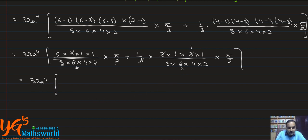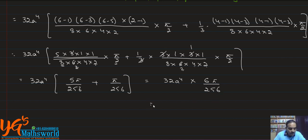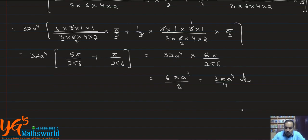Simplifying: 32a⁴ · [5π/256 + π/256] = 32a⁴ · (6π/256) = 32a⁴ · 6π/256 = 6πa⁴/8 = 3πa⁴/4. So the final answer is 3πa⁴/4. Hope it is clear to everyone.